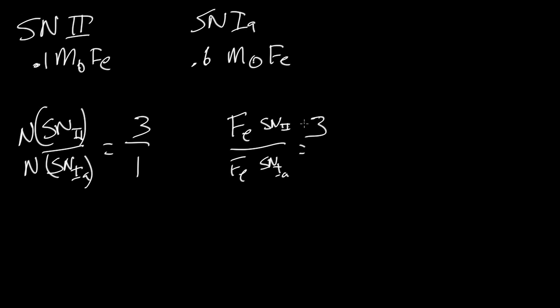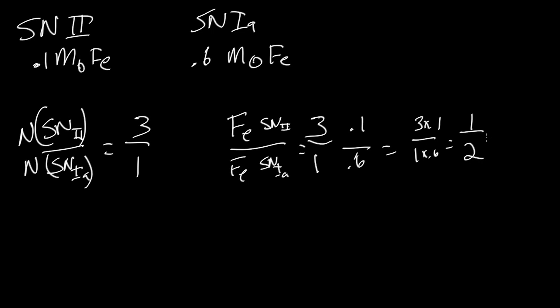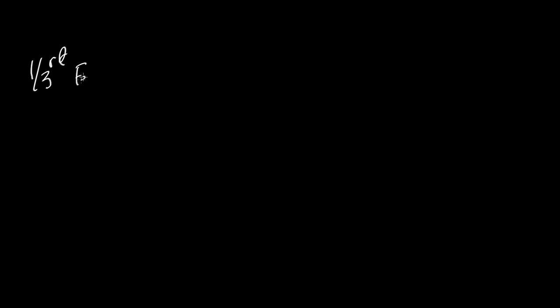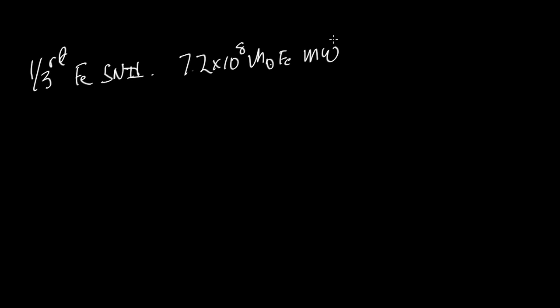We have a 3-to-1 ratio in number, but 0.1 to 0.6 in terms of how much iron they produce. So when we multiply this out: 3×0.1 divided by 1×0.6, we find the ratio of iron formed in Type 2 supernovae to Type 1a is 1 to 2. That means one third of the iron in the universe will be created by Type 2 supernovae. We need about 7.2×10⁸ solar masses of iron in the Milky Way, so the total formed in Type 2 supernovae would be one third of that.